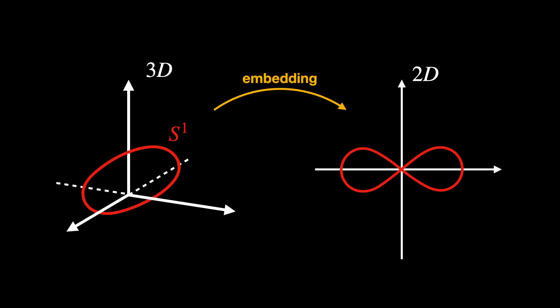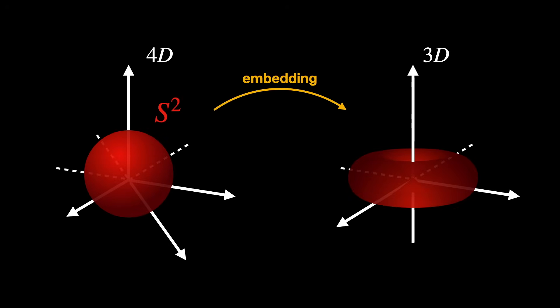Just as the figure eight is a weird embedding of a circle S1 from 3D into 2D, maybe this space is a sphere S2 embedded in a particular way from 4D into 3D. It's just a guess.